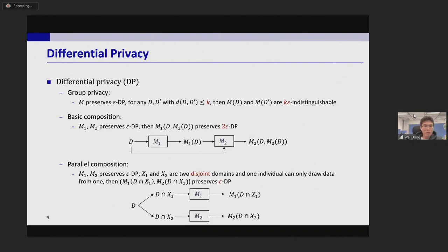The second one is called basic composition. If we input D into M1 and M2 sequentially, then we need to double the privacy budget.